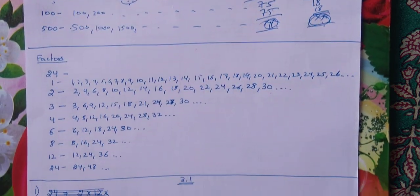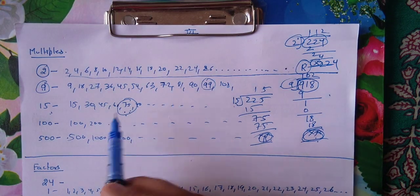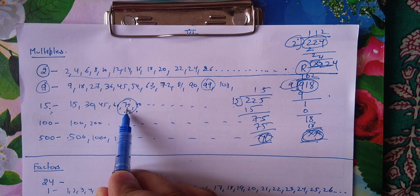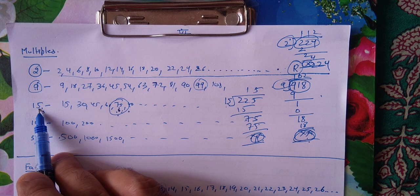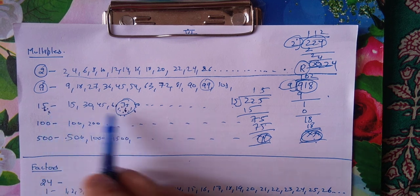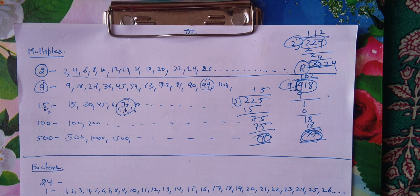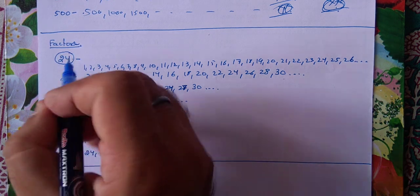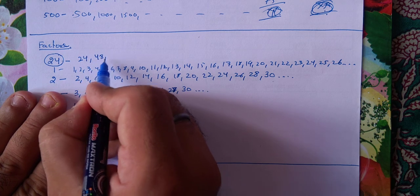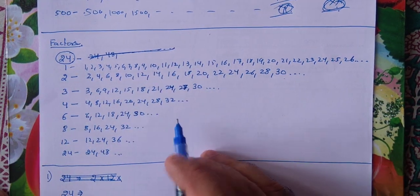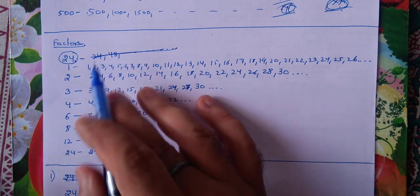अब आते हैं factors पर. Factors - multiple हमने समझ लिया. Multiples क्या होते हैं: 75, 15 का multiple है क्योंकि 15 को 5 बार multiply करेंगे तो 75 तक पहुँच जाएंगे. So 75 is a multiple of 15. Now what are factors? Suppose one number is 24. Factors means: 24 किन-किन numbers की table में आता है, वो सारे उसके factors होते हैं.